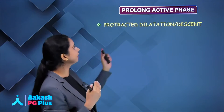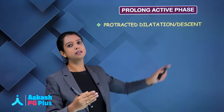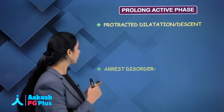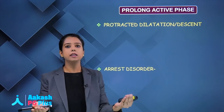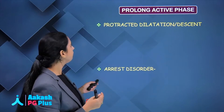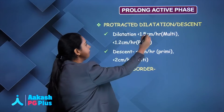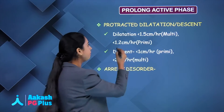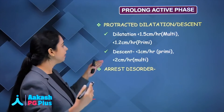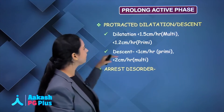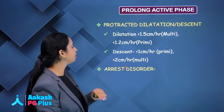Next comes prolonged active phase. Active phase is when the baby has to come out — actual labour and descent starts. Prolonged active phase is described in two types: protracted dilatation and descent, meaning slow dilatation and slow descent; and arrest disorder, where dilatation and descent are not occurring at all. Protracted is defined as less than 1.2 cm per hour in primigravida and less than 1.5 cm per hour in multigravida. For descent, less than 1 cm per hour in primigravida and less than 2 cm per hour in multigravida.